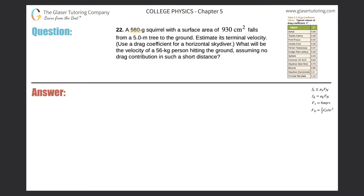Number 22, a 560 gram squirrel with a surface area of 930 squared centimeters falls from a five meter tree to the ground. Estimate its terminal velocity and use the drag coefficient for a horizontal skydiver.